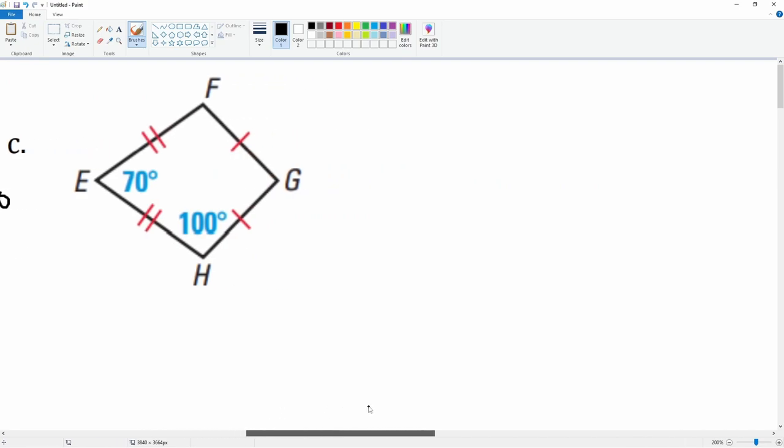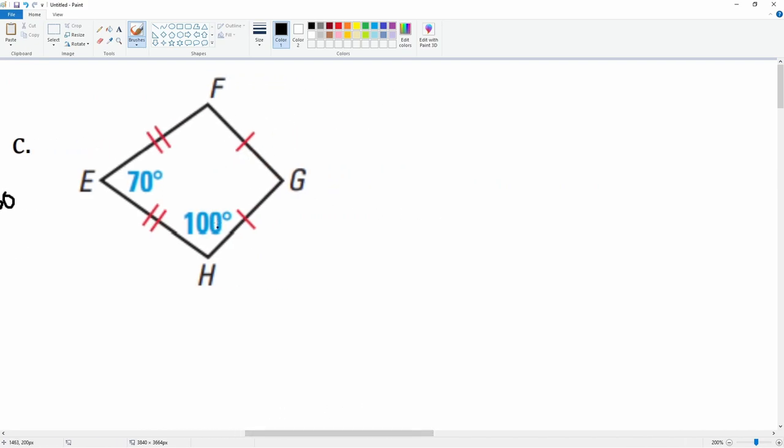Then we have part c. We know that since angle H is 100°, we know angle F also has to be 100°. Then we don't know what angle G is, so that can just be an x.